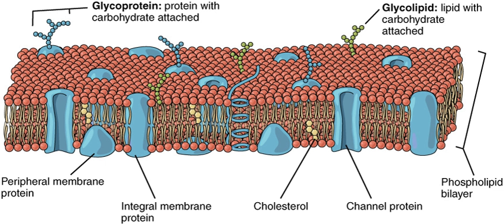The phospholipid bilayer is formed due to the aggregation of membrane lipids in aqueous solutions. Aggregation is caused by the hydrophobic effect, where hydrophobic ends come into contact with each other and are sequestered away from water. This arrangement maximizes hydrogen bonding between hydrophilic heads and water while minimizing unfavorable contact between hydrophobic tails and water. The increase in available hydrogen bonding increases the entropy of the system, creating a spontaneous process.